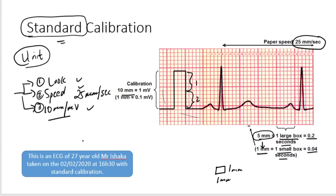In the end, if you're with a consultant, you say, my brother, can you please interpret this ECG? The very first thing, so that you don't confuse yourself, you just say this is an ECG of 27-year-old Mr. Ishaka. It was taken on the 2nd of February 2020 at 16:30 with standard calibration. I'm telling you, if you can start the ECG like that, you've already bought yourself time to think what the hell I'm supposed to look for.